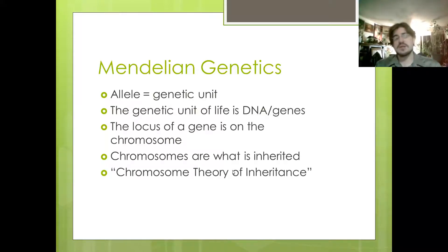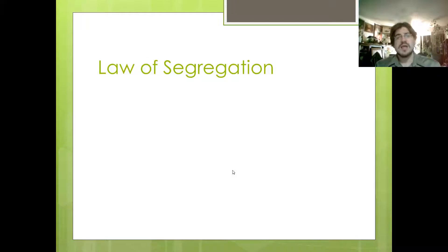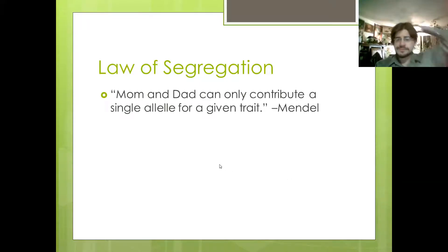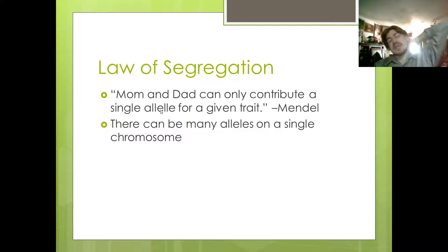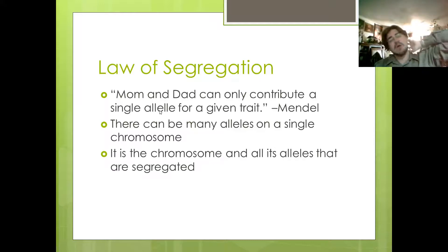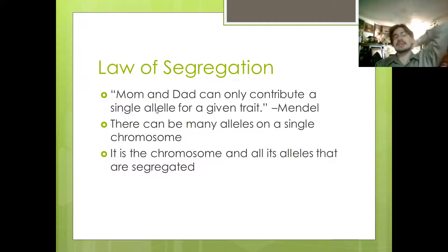So this leads us to the chromosome theory of inheritance. Instead of the law of segregation applying to single alleles, the law of segregation applies to chromosomes. In Mendelian genetics, mom and dad can only contribute a single allele for a given trait. In chromosomal genetics, because there can be many alleles on a single chromosome, it's the chromosome and all its alleles that are segregated — mom or dad can only donate a single chromosome and all the alleles associated with it.